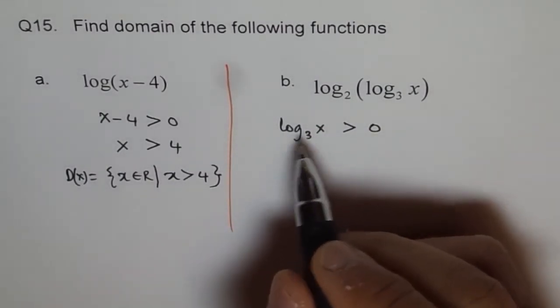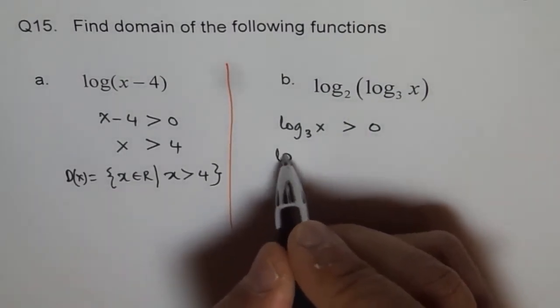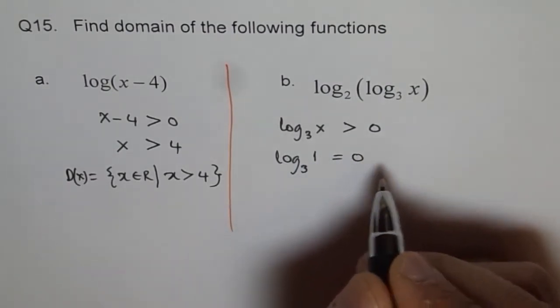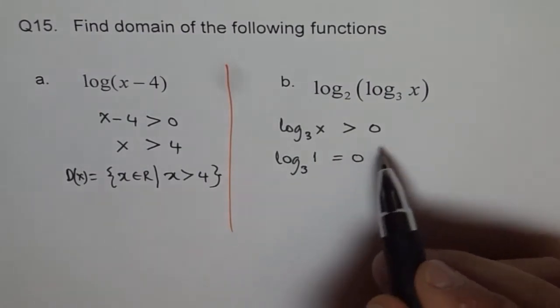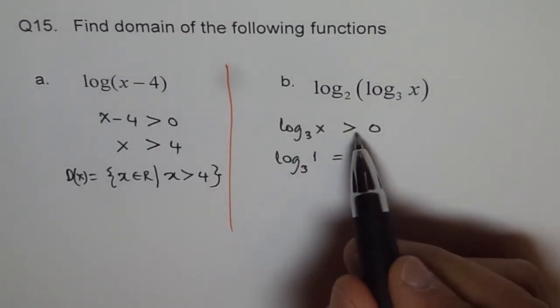Now, we know that log of 1 is always 0. We know log to any base of 1 is equal to 0. It has to be greater than 1. Log functions are always increasing if their base is more than 1. They are always increasing.